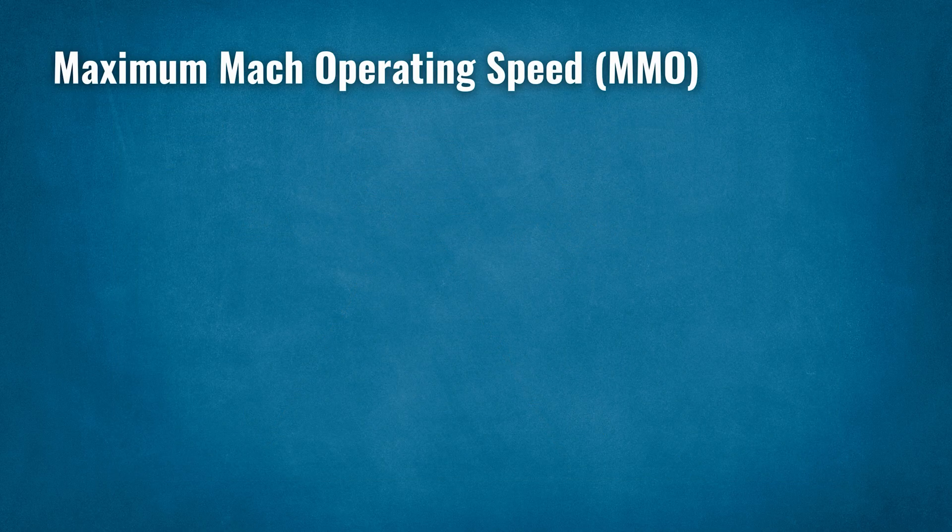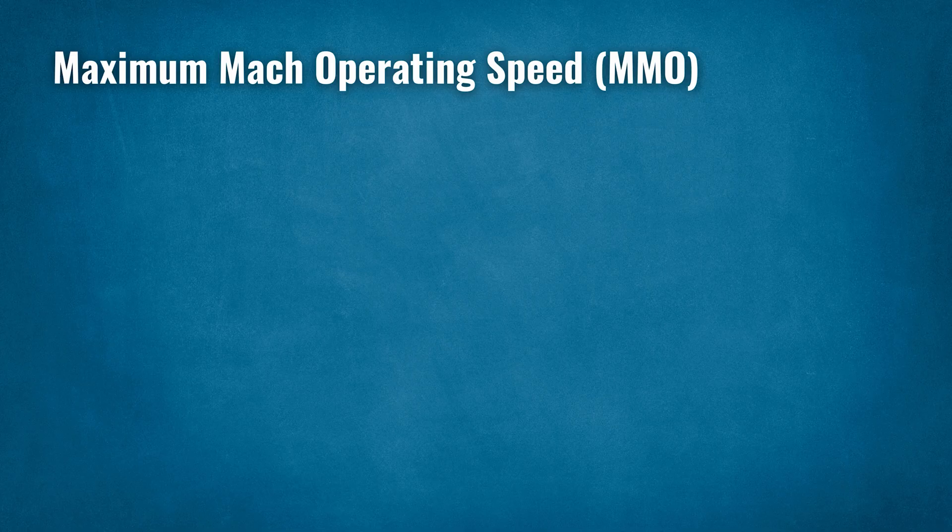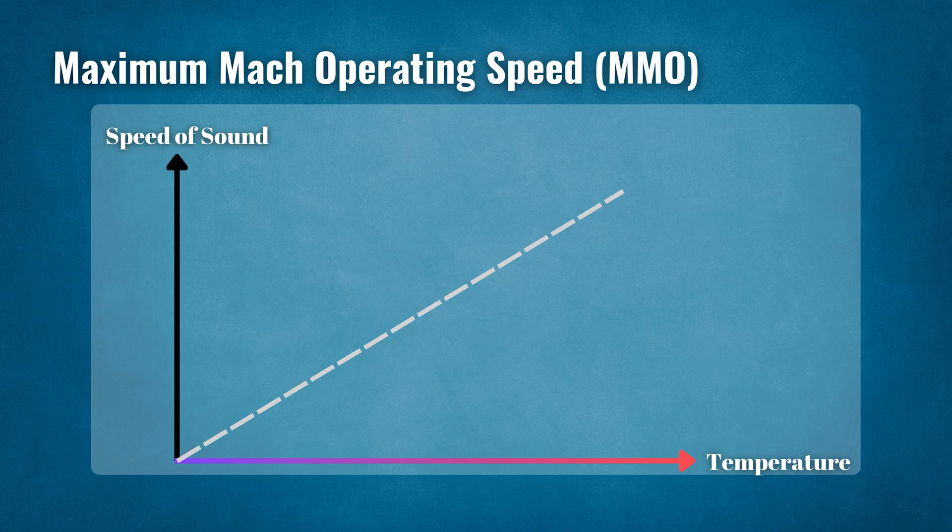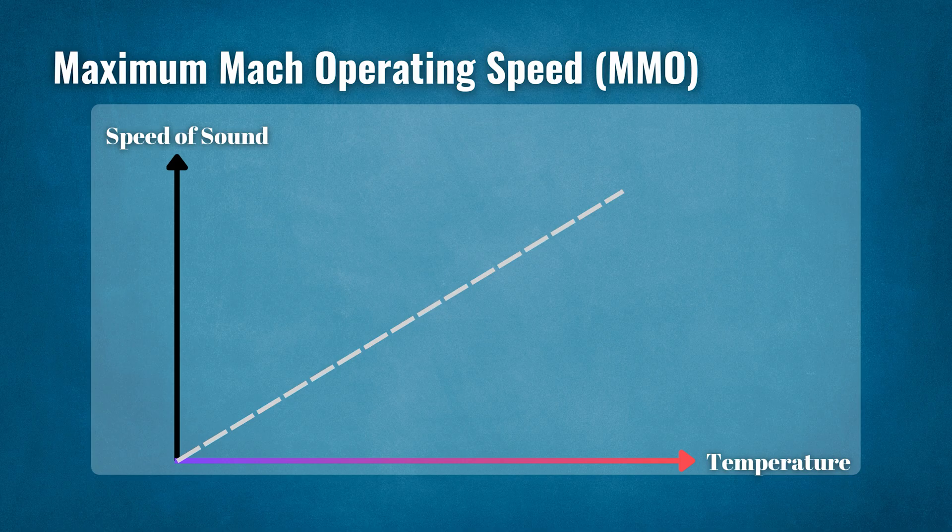Maximum Mach Operating Speed, MMO. The speed of sound varies with temperature and gets slower at colder temperatures. This means that higher altitudes with their colder temperatures translate to a slower speed of sound, or Mach speed. The plotted line on the right side of the coffin corner graph depicts the Mach maximum speed that the plane can operate at.